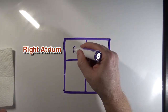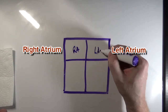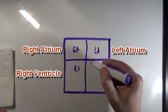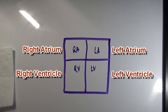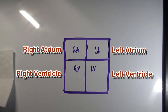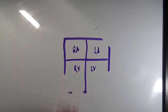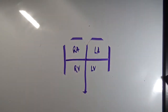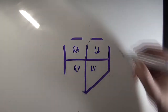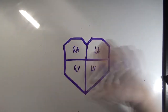We'll have our right atrium up here and our left atrium, and then our right ventricle here and left ventricle here. I'm going to modify this a little bit because to me it doesn't look that much like a heart. There, that looks a little closer to what a heart looks like.